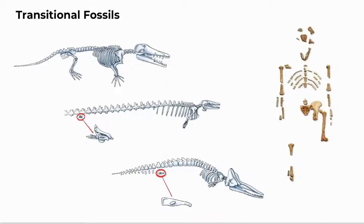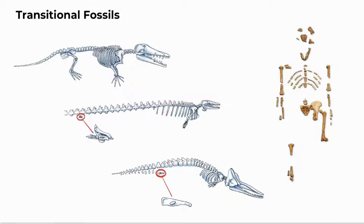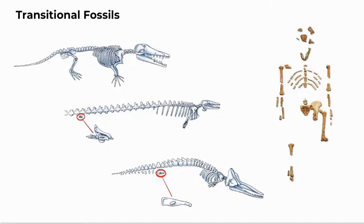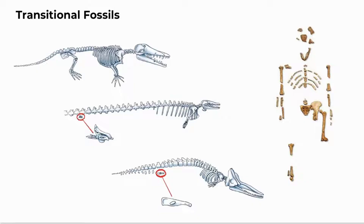Other transitional fossils include whale fossils with reduced hind limbs adapted for swimming and forelimbs adapted for walking on land. The famous fossil Lucy is not considered a direct ancestor of modern humans but is considered a transitional fossil. She shows ape-like characteristics like long arms, a protruding jaw, and a small brain, but also human-like traits like bipedalism — the ability to walk upright.